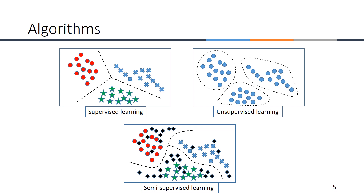Unlike supervised learning, in unsupervised learning there is no label — you don't know the shape or label of the data. Making groups of the available data points is the big task. Generally, similar data points remain in the same range. For example, in a classroom, like-minded friends sit together. Based on a distance function, unsupervised learning identifies which data point belongs to which group.